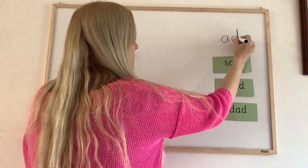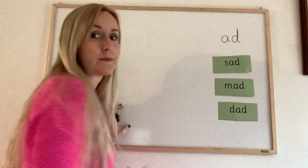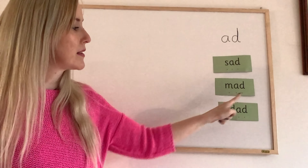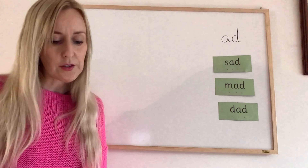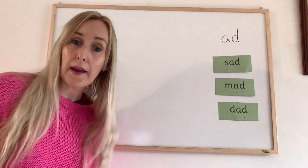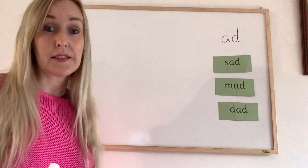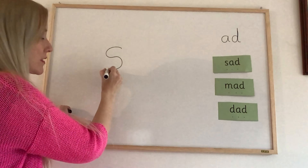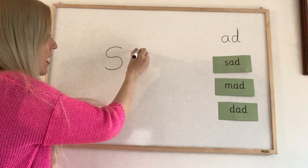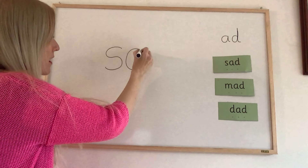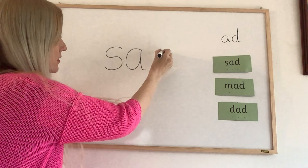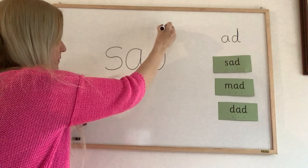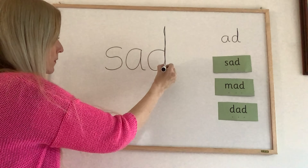Let's have a look at the word. What sound came first? M. What sound comes in the middle? A. What sound comes at the end? D. M, a, d — mad.